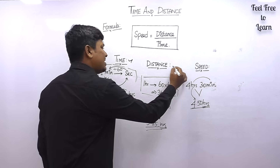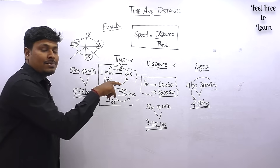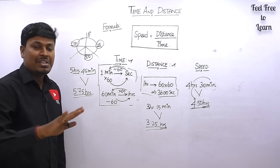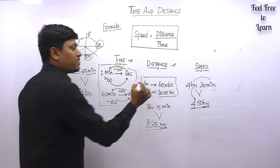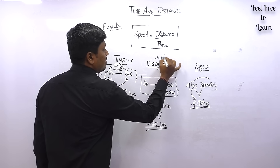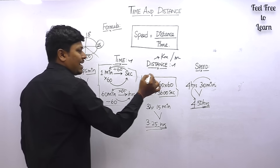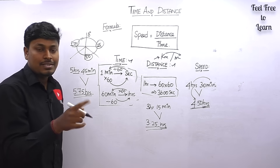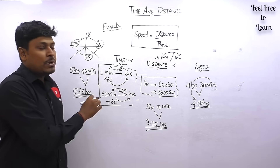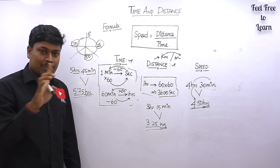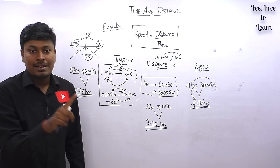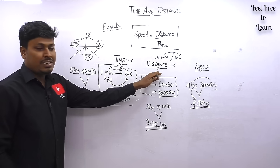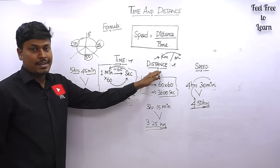Distance is very easy — inside this category we only need to convert kilometers to meters and meters to kilometers. The key fact is 1 kilometer equals 1000 meters. Most questions will be based on kilometers or meters. That is more than enough for the concept of distance.